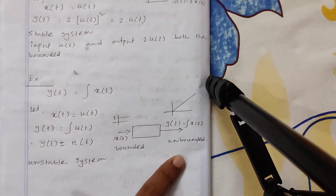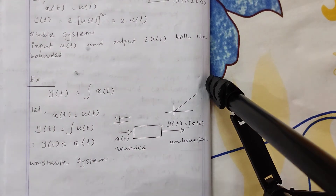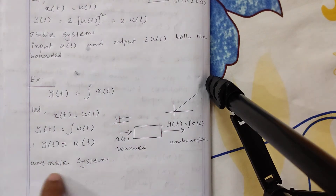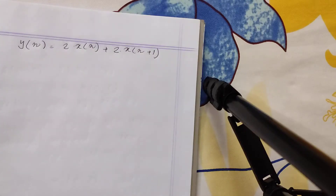Because the ramp signal equals 1 at t=1, 2 at t=2, 3 at t=3, 4 at t=4 — it keeps increasing. So this is an unbounded output. Therefore, this is an unstable system. In this way we check the stability of a system.